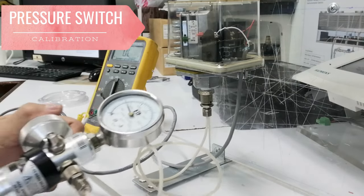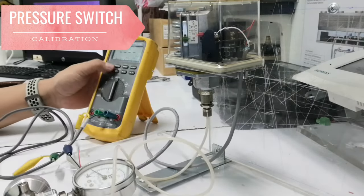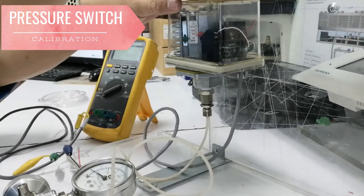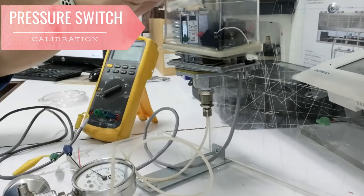Referring to the jockey pump cut-in and cut-off pressure, we need to adjust this pressure switch at 90 psi for cut-in and 120 psi for cut-off.